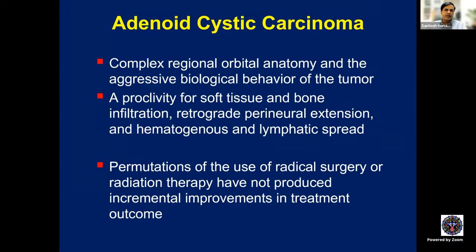Adenoid cystic carcinoma is aggressive because of perineural invasion — through the nerve it can reach the superior orbital fissure and cavernous sinus. It can also spread hematogenously and via lymphatics. One form of treatment is suboptimal. If you only excise it, it may recur in the cavernous sinus or intracranially. If you only give radiation, metastasis will still occur in the lung or skeletal system. You must address all three: good surgery plus radiation plus chemotherapy.